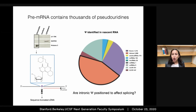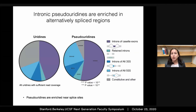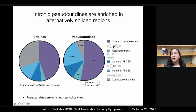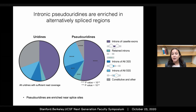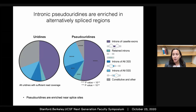So I asked, are intronic pseudouridines positioned to affect splicing? I found that pseudouridines in introns are enriched around alternatively spliced regions — for instance, they're enriched in the introns flanking cassette exons, which are exons that can either be included or skipped from the final messenger RNA to yield distinct protein-coding mRNA isoforms. Similarly, pseudouridines were enriched around other types of alternative splicing, and these intronic pseudouridines were generally located close to splice sites, or the exon-intron boundaries, where regulatory elements for splicing are often found.